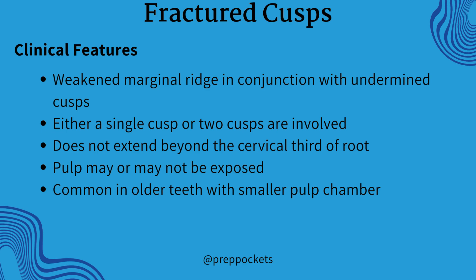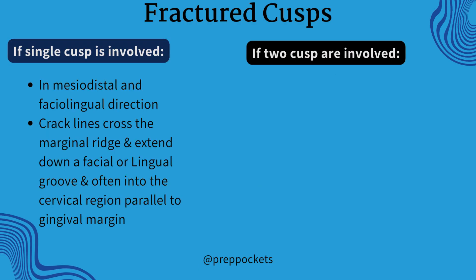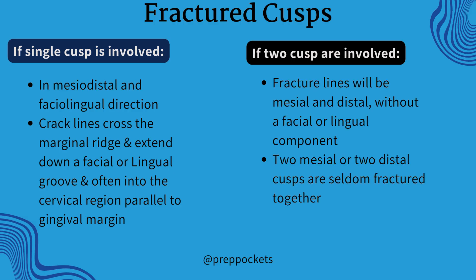Clinical features involve undermined cusps with weak marginal ridges. It does not extend beyond the cervical third of the root. There can be pulp exposure, but not necessarily, and it is common in older teeth with a small pulp chamber, involving a single or two cusps. If a single cusp is involved, it will be in both mesiodistal and faciolingual directions, crossing the marginal ridge and extending down a facial or lingual groove, often into the cervical region parallel to the gingival margin.